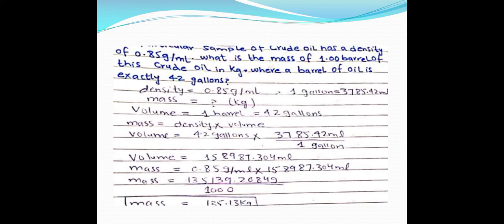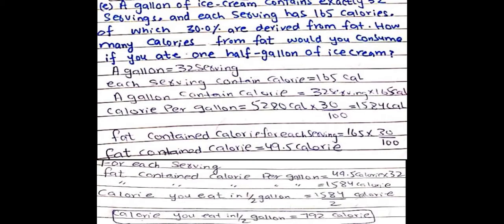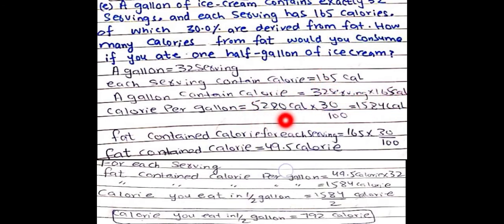A gallon of ice cream contains 32 servings, and each serving contains 165 calories, so one gallon contains 32 × 165 calories. Of these, 30% are derived from fat: multiply total calories by 30/100 to get 1584 calories from fat per gallon. For half a gallon, divide by 2 to get 792 calories from fat.